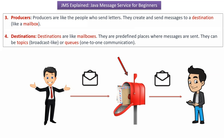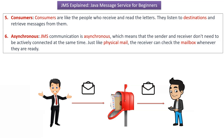Queues are used for one-to-one communication. Topics are used for broadcast-like communication. Consumers are like the people who receive and read the letters — they listen to the destinations and retrieve messages from them.